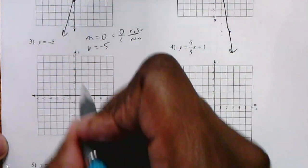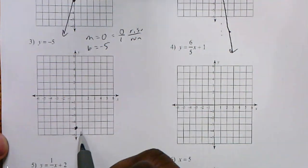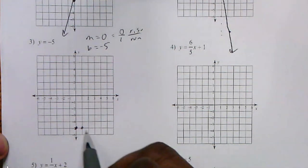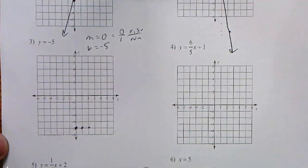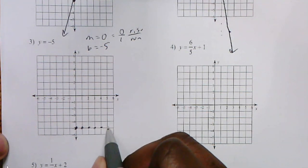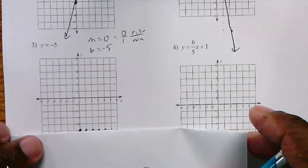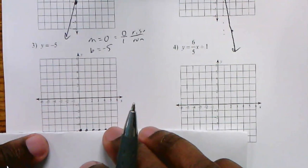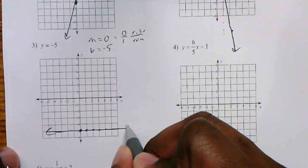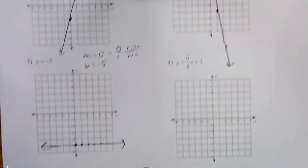If I graph that line, my y-intercept is at negative 5. I rise 0, run 1. I rise 0 and run 1 again. If I keep rising 0 and running 1, I would see it's really a horizontal line. So connect those dots. I basically have the line that just goes through 5. That would be the line y equals 5.